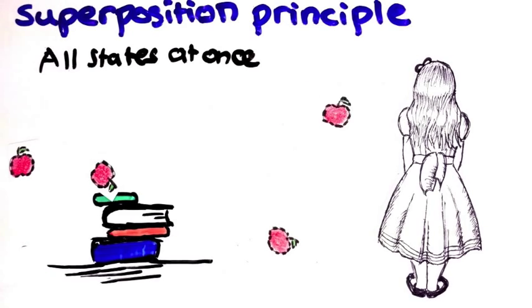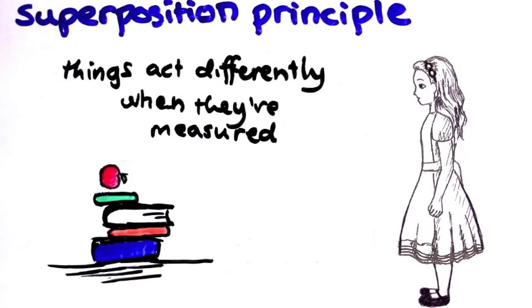That means that while we have our backs turned, things act way differently to how they act when we're looking. But do we actually need to believe that? I mean, we can never, by definition, actually catch the objects in the act.